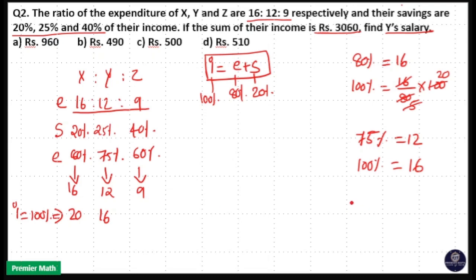Same way, 60% is equal to 9. That means 20% is equal to 3. So 100% will be 5 into 3, 15. That means 15 parts is Z's salary.